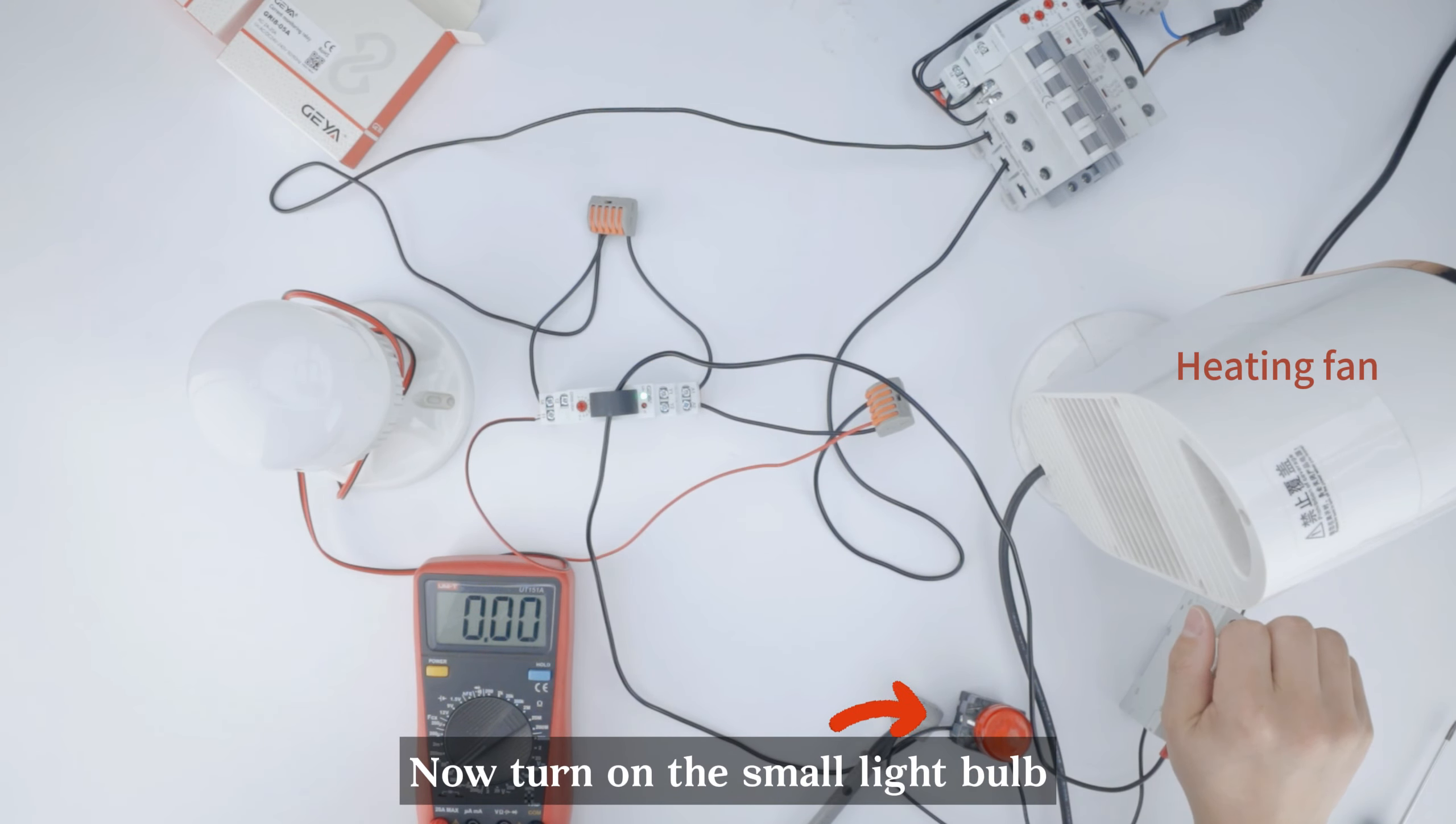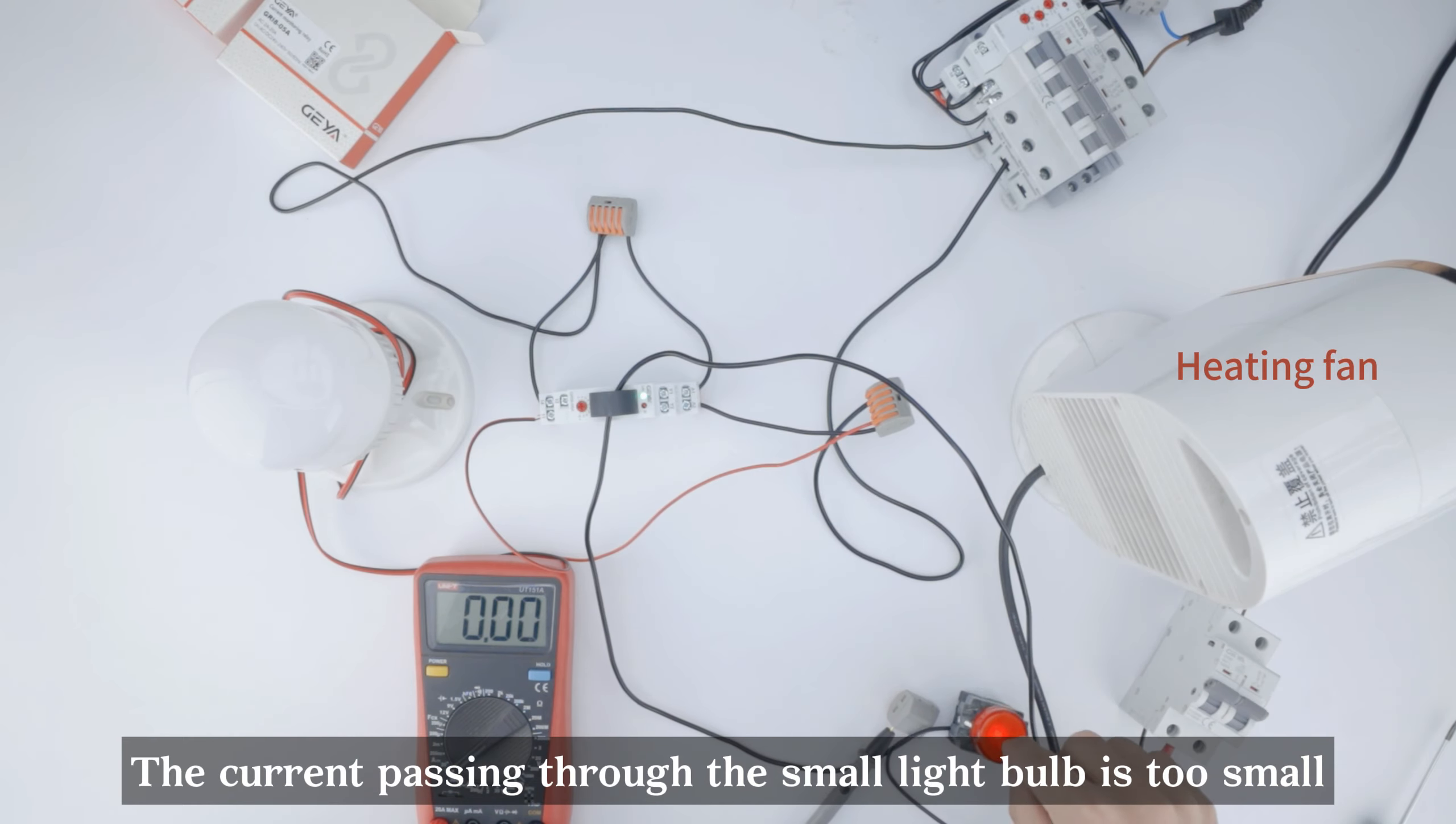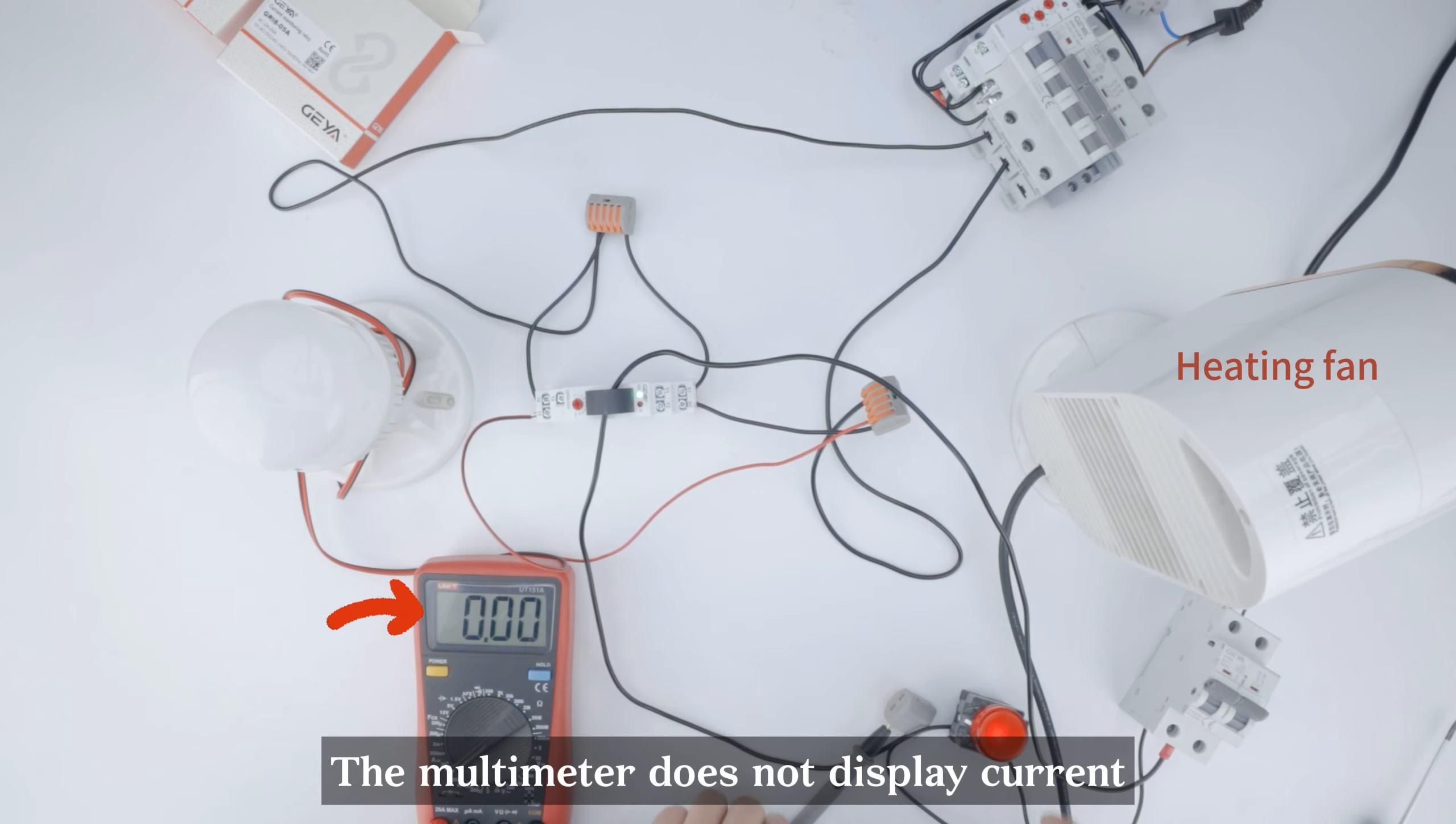Now turn on the small light bulb. The current passing through the small light bulb is too small. The multimeter does not display current.